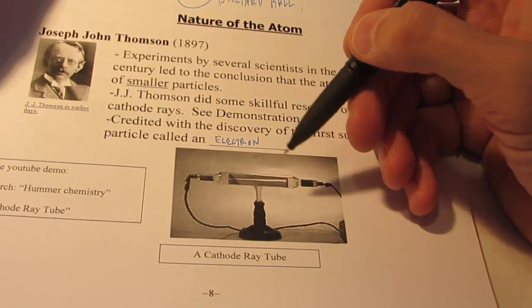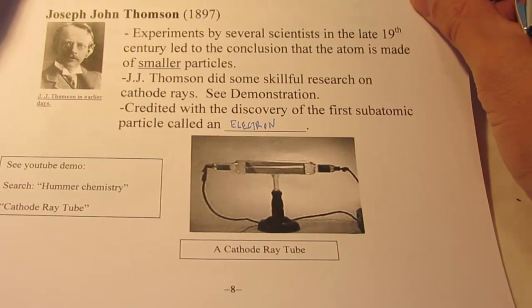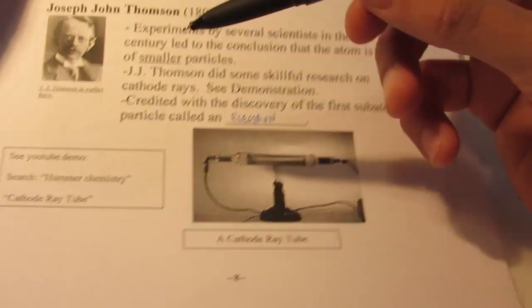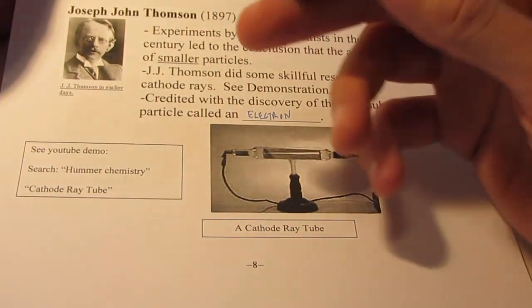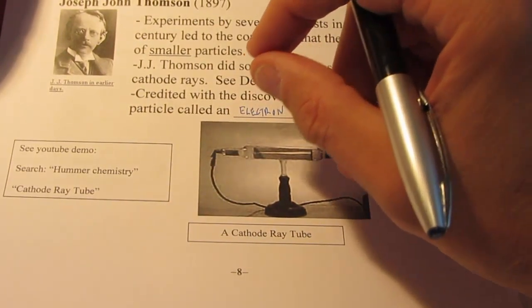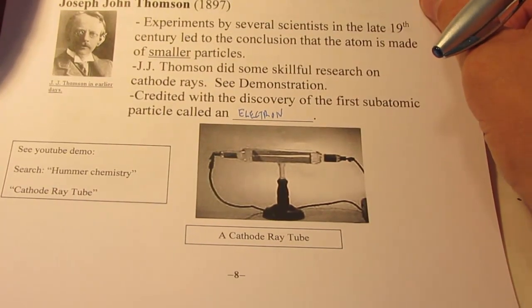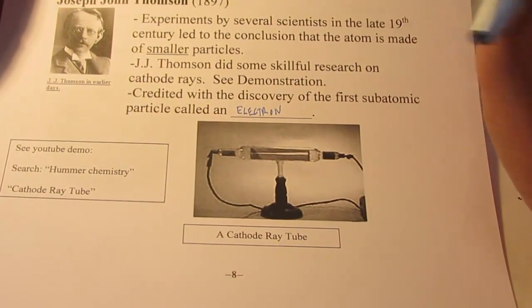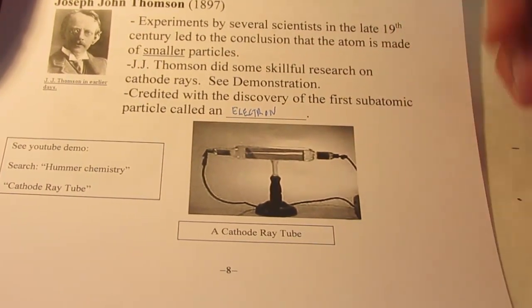It's negatively charged and it weighs about 2,000 times less than a hydrogen atom. And that was significant because the hydrogen atom at that time was the smallest known atom. And if you have something 2,000 times smaller than the smallest atom, you have something that's subatomic.